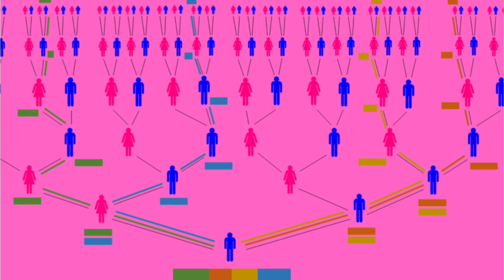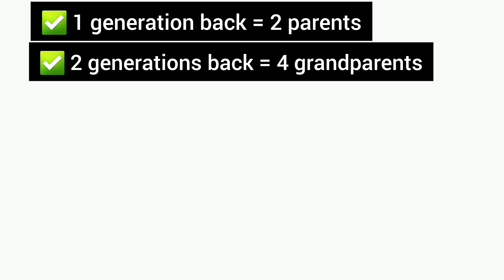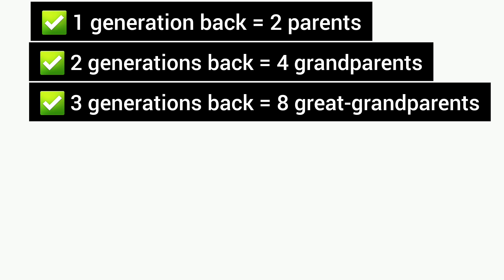To understand why this theory makes sense, we need to look at some simple mathematics of family trees. You have two parents, four grandparents, and eight great-grandparents. Each generation you go back, the number of ancestors doubles. Let's list a few examples. One generation back equals two parents, two generations back equals four grandparents, three generations back equals eight great-grandparents,